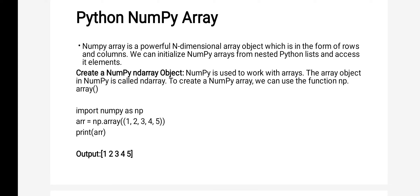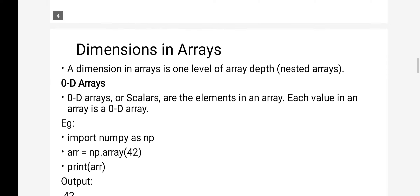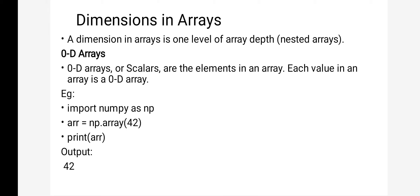NumPy is used to work with arrays and contains functionalities that work on arrays. Using NumPy you can find out different dimensions of an array — how many subscripts the array has, such as 1D, 2D, or 3D. A dimension in an array is one level of depth. The first type is a 0-dimensional array: if you have only a single element, that is a zero-dimensional array. If there is more than one element, that is a one-dimensional array.